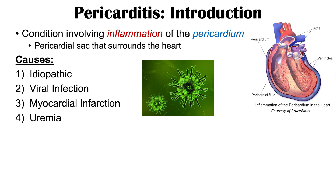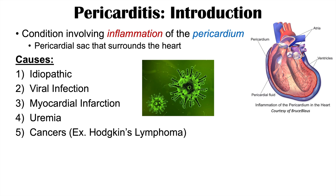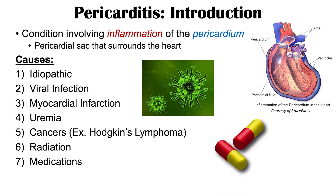We can also see pericarditis from uremia — so increased levels of urea in the blood, which can be from chronic kidney disease. Certain cancers can also cause pericarditis, including Hodgkin's lymphoma. Radiation can also lead to pericarditis, as can certain medications. And some autoimmune conditions like rheumatoid arthritis can also lead to pericarditis as well.